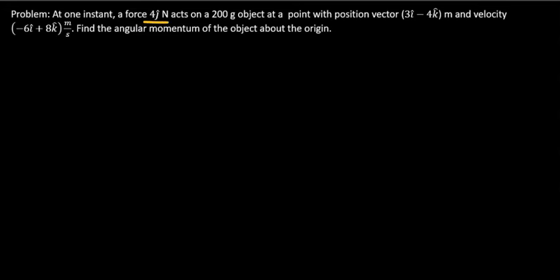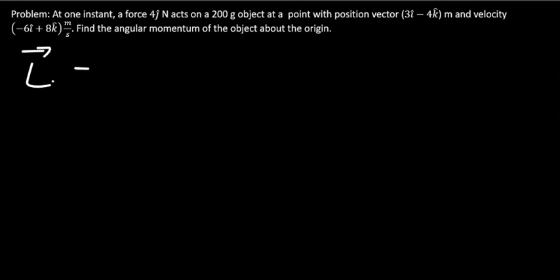Problem 1: At one instant, a force of 4 newtons in the direction of j-hat acts on a 200-gram object at a position vector given, with velocity given. Find the angular momentum of the object about the origin. Since this is a point particle, the angular momentum is given by the mass times the cross product of the position vector and velocity vector.